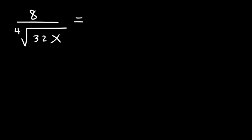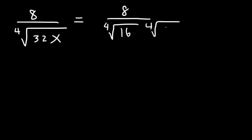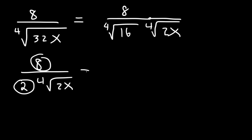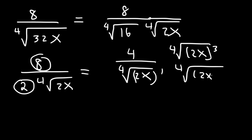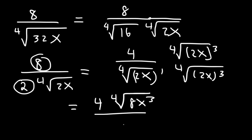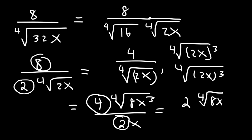Now if we have 8 divided by the fourth root of 32x, simplify first. Break up 32 into 16 times 2 because the fourth root of 16 is 2. This gives 2 times the fourth root of 2x in the denominator, and 8 divided by 2 is 4, so we have 4 divided by the fourth root of 2x. Now rationalize — we need three more 2x terms, so multiply top and bottom by the fourth root of 2x to the third power. The bottom becomes 2x, and 4 divided by 2 is 2, giving a final answer of 2 times the fourth root of 8x cubed, over x.